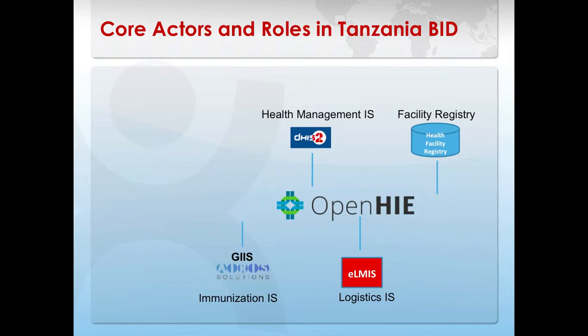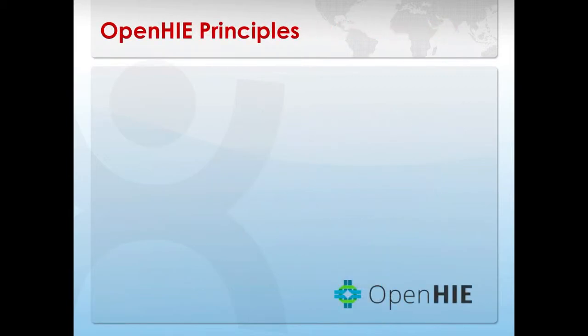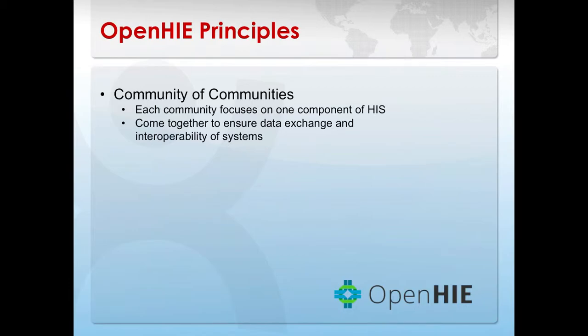The tool that we are going to use is OpenHIE. This will be our big black box that I'll explain in a moment — it's going to help all the data flow freely between the systems in a harmonized way. OpenHIE is a community of communities. There is a community for each one of the software components that are part of our health information exchange, including our facility registry, a health worker registry, a client registry, and various other components. Having this community of communities ensures that these various communities can come together for a common goal, which is true interoperability of systems and a meaningful exchange of data.